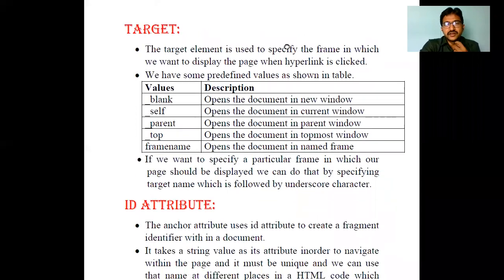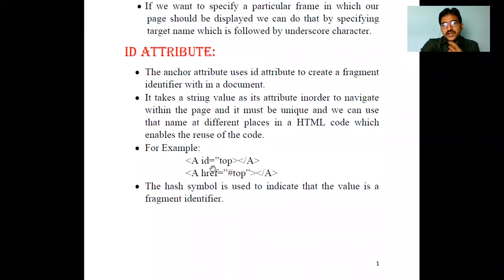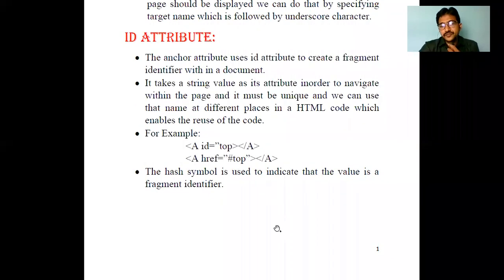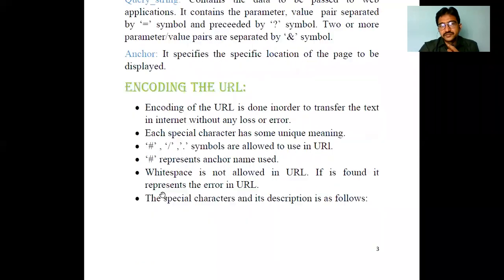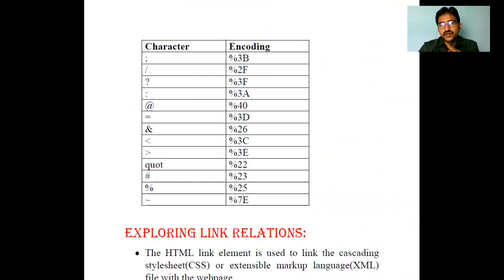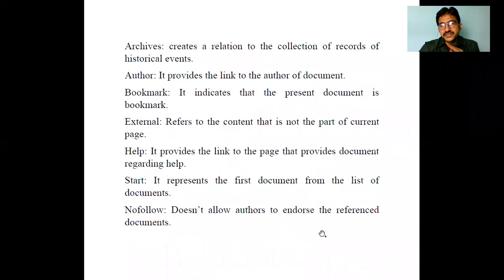The target values are: underscore blank, underscore self, underscore parent, underscore top, and frame name. The id attribute uses id='value' in the tag and hash in the href. URL structure can use protocols like http, file, ftp, mailto, news, telnet, and others. URL encoding uses percentage codes like %3B and %2F which represent special characters.